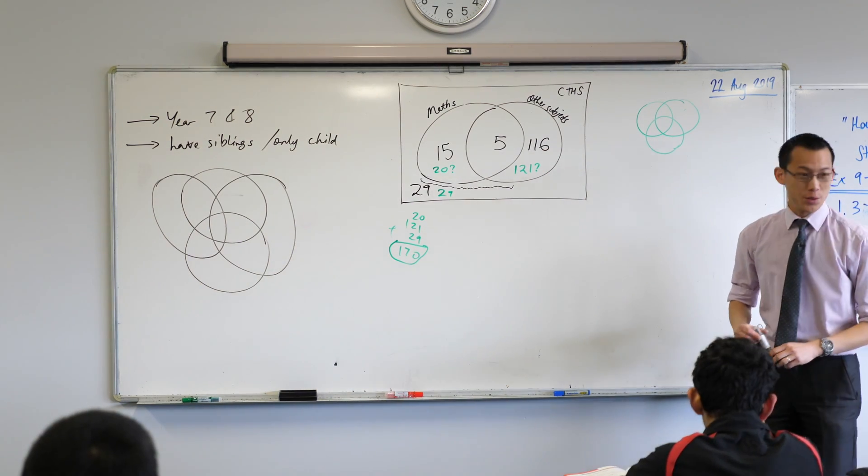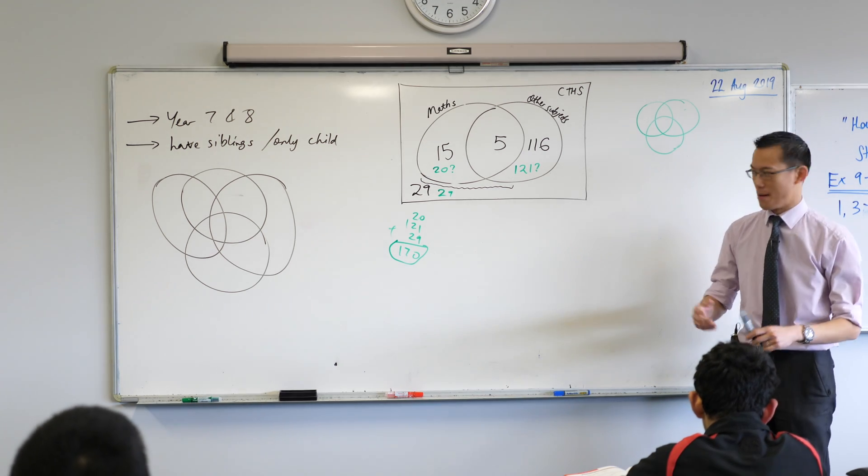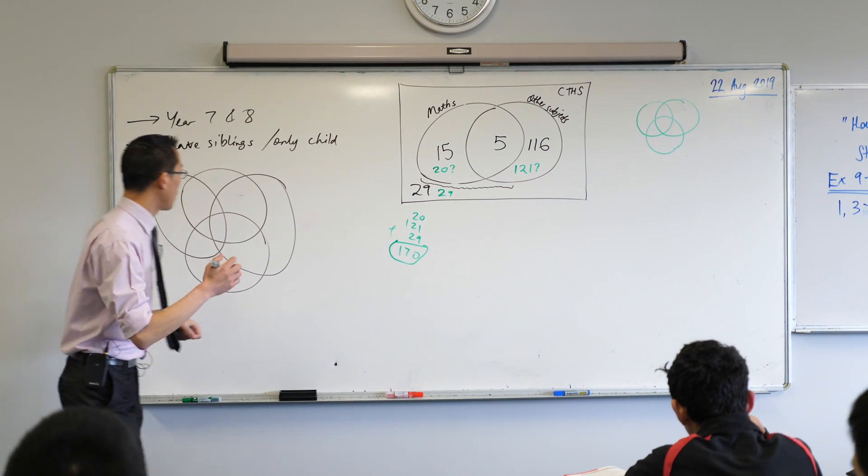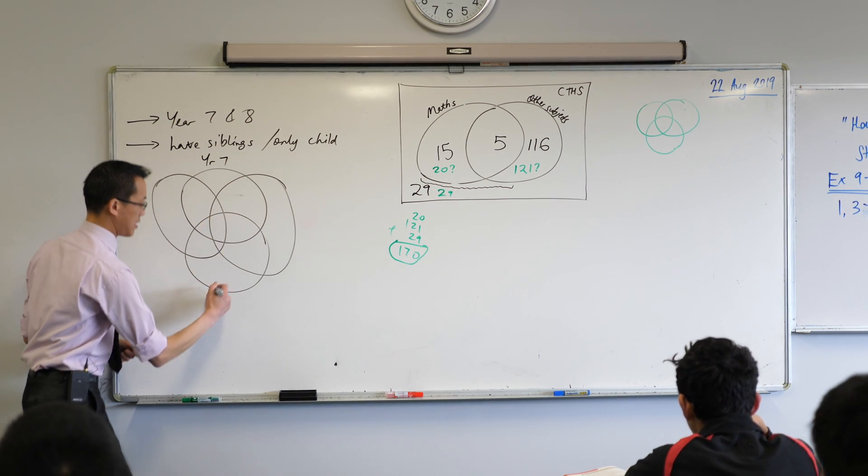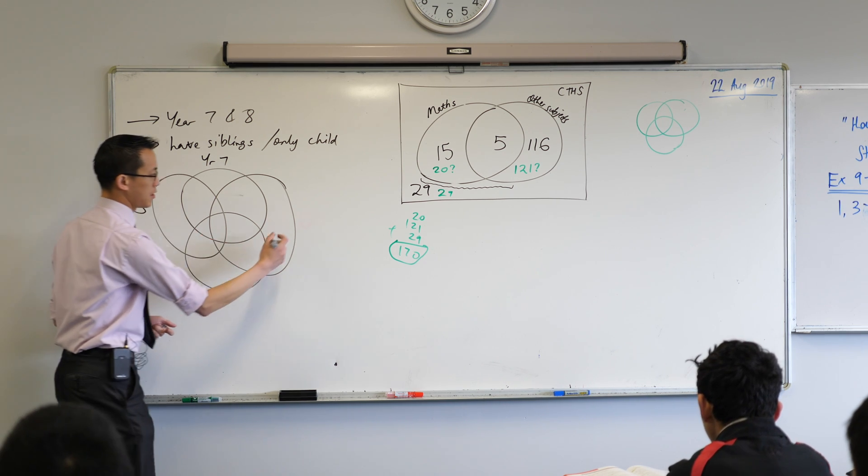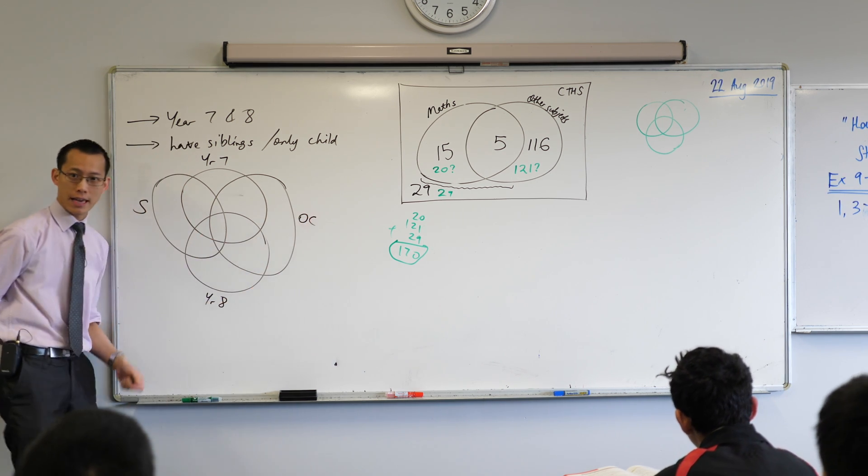Does that look confusing to you? It looks confusing to me, partly because my circles are not very well drawn. But also, there's a bigger problem. I want you to have a look at this. If I call this Year 7 and Year 8, and then siblings and only child, okay?